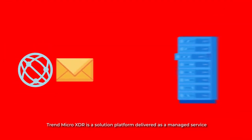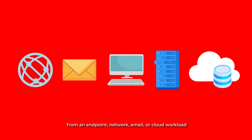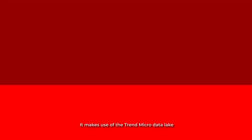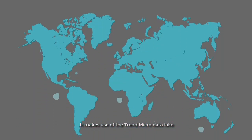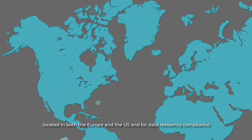Trend Micro XDR is a solution platform delivered as a managed service that aggregates and analyzes telemetry from an endpoint, network, email, or cloud workload using machine learning and security analytics to correlate events. It makes use of the Trend Micro Data Lake, located in both Europe and the US, for data residency compliance.